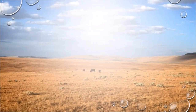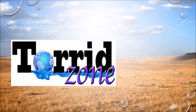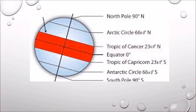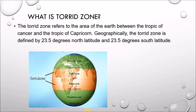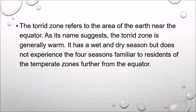First, let us understand the torrid zone. This red portion on the globe is the torrid zone. The torrid zone refers to the area of the earth between the Tropic of Cancer and the Tropic of Capricorn, geographically defined by 23.5 degrees north latitude and 23.5 degrees south latitude, near the equator.